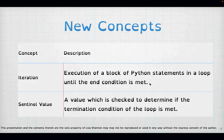We have some new concepts: iteration and sentinel value. Iteration is when you execute the block of code inside a loop. A sentinel value is a value checked to determine if the termination condition of the loop is met — because you don't want to run loops forever, as that could use up all your system resources. You always want to give a loop the opportunity to exit, and a sentinel value is the way to do that.